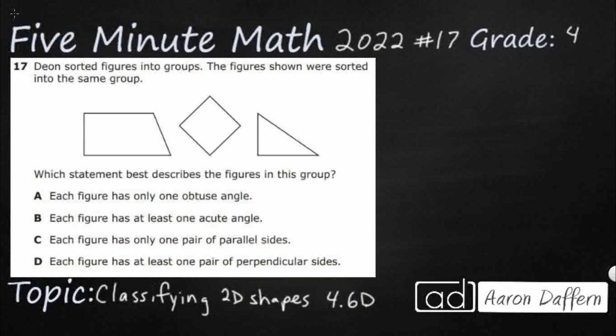Dion is sorting figures into groups and the figures are sorted into the same group. We don't know what characteristic is putting these shapes together, so we need to find a statement here. One of these is going to be true and three of these can be false, and the true statement is going to best describe the figures in this group. So let's go ahead and label these real quick.